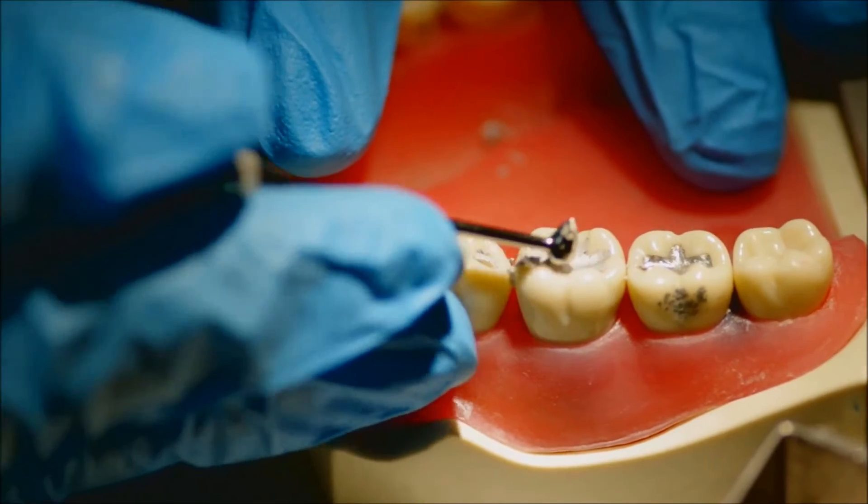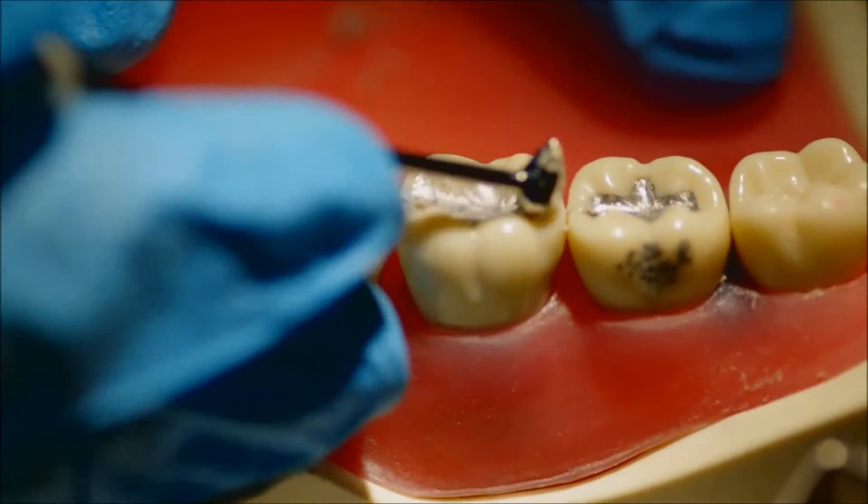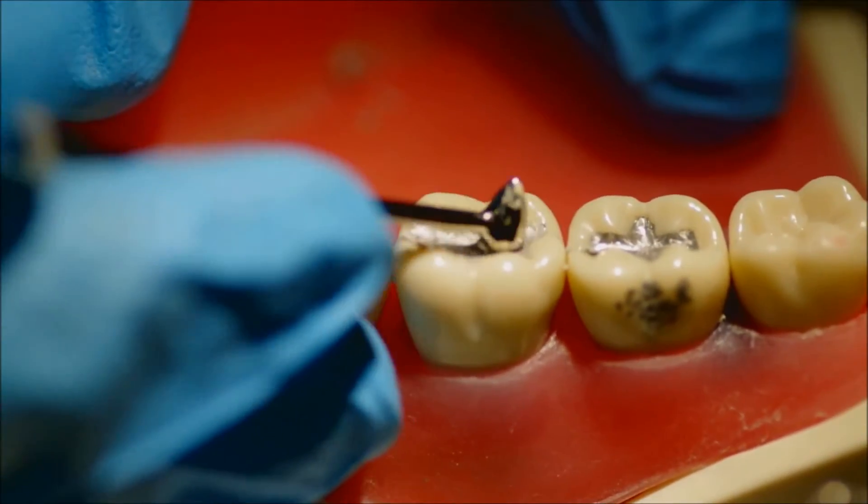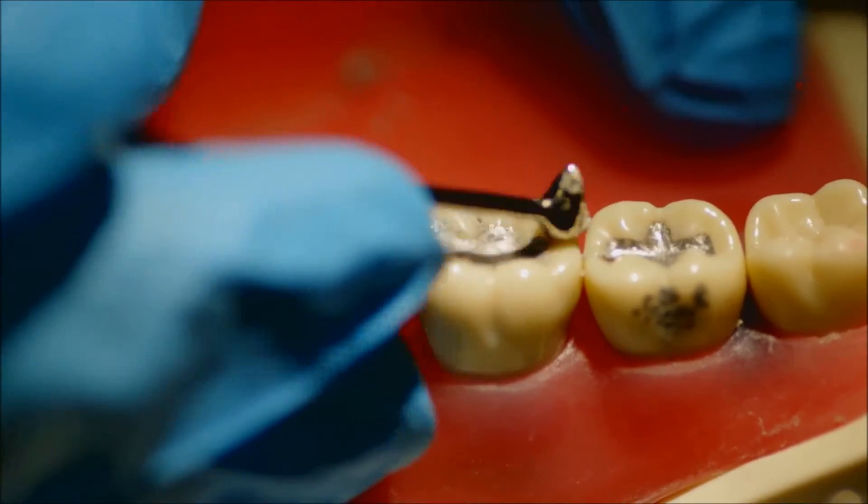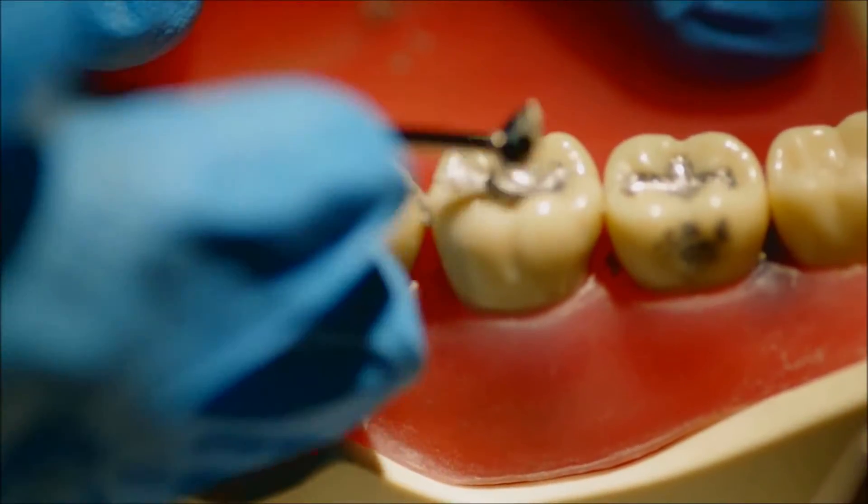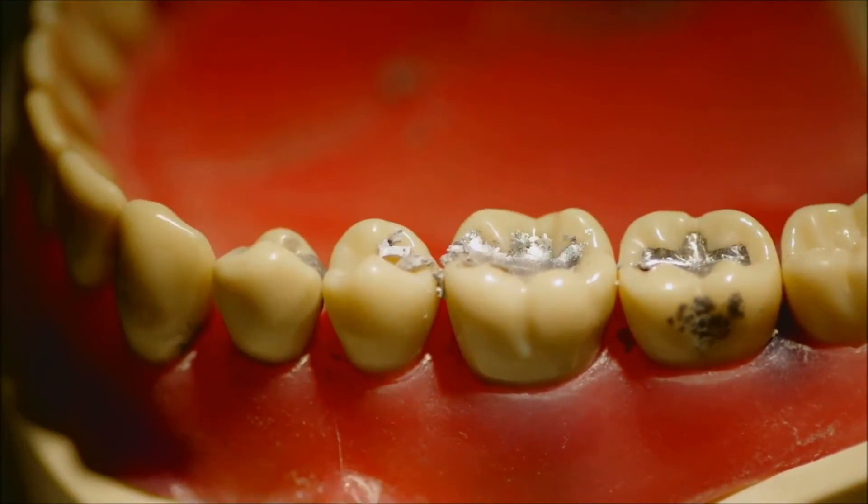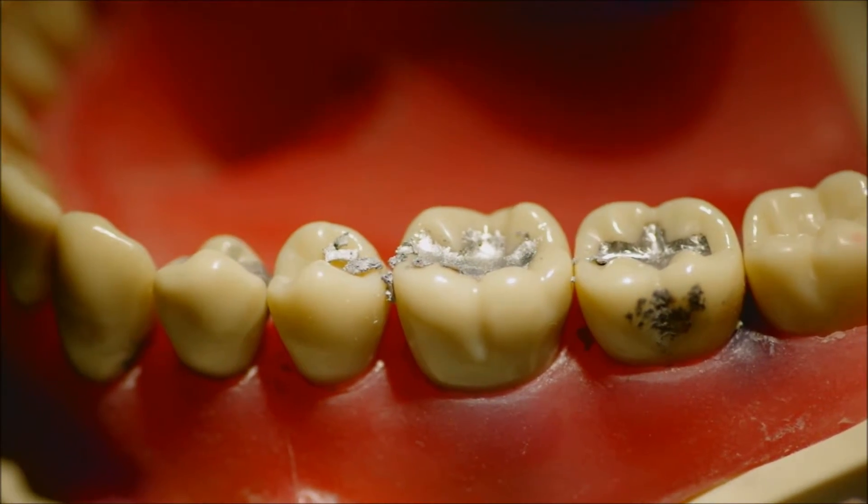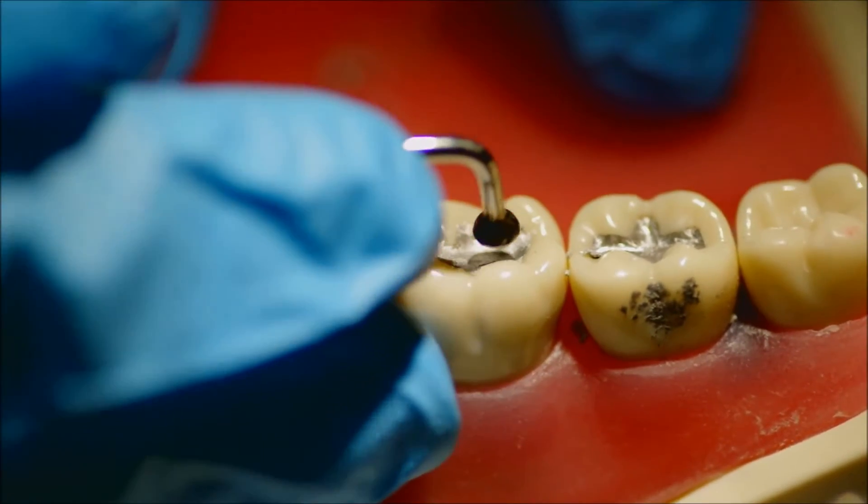I'm now using the wide side of the egg ball burnisher or the football burnisher, and what I'm using this for is to create some elementary anatomy. Where I need a concavity, I create a concavity.